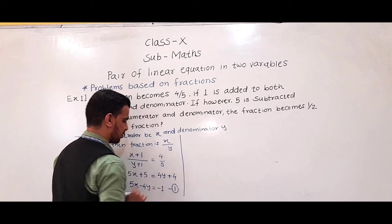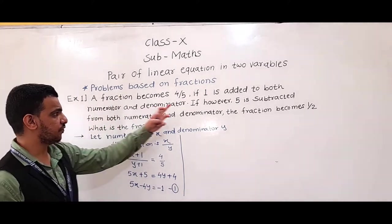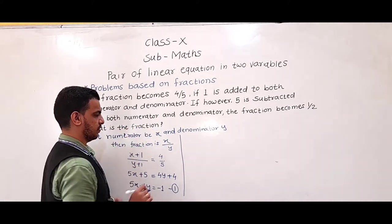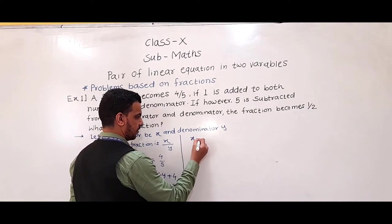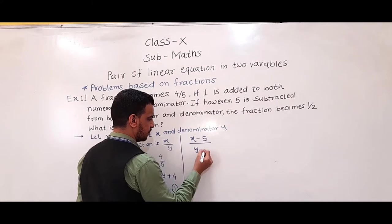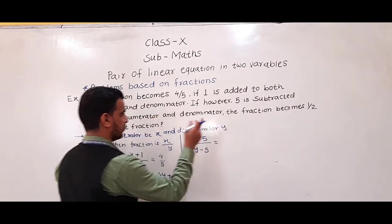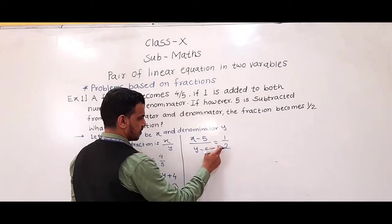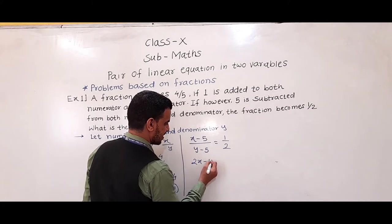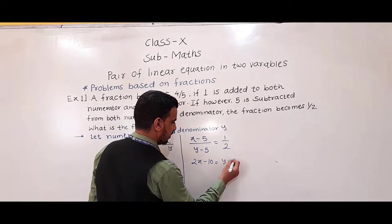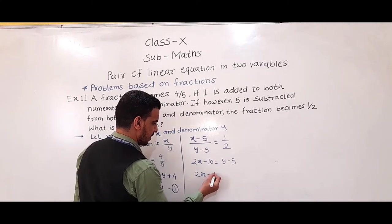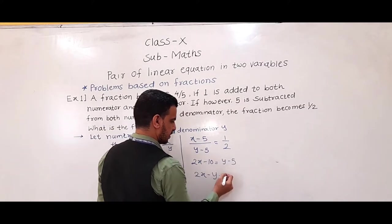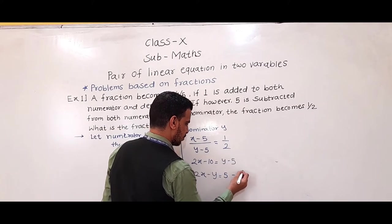Similarly, the second condition is given: if 5 is subtracted from both numerator and denominator, the fraction becomes 1 by 2. So (x−5)/(y−5) = 1/2. If we simplify: 2x − 10 = y − 5, so 2x − y = 5. This is equation 2.